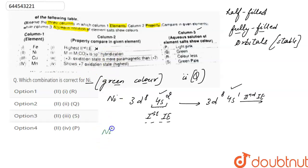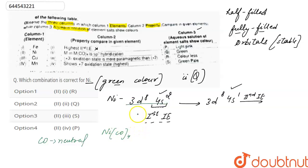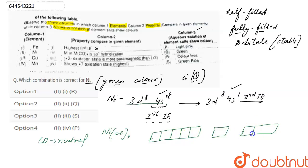Next is: metal in metal tetracarbonyl is sp³ hybridized. In nickel tetracarbonyl, nickel is in zero oxidation state because carbonyl is a neutral ligand. The electronic configuration is 3d⁸4s², with five 3d orbitals, one 4s, and three 4p orbitals. We have eight electrons in d and two electrons in s.